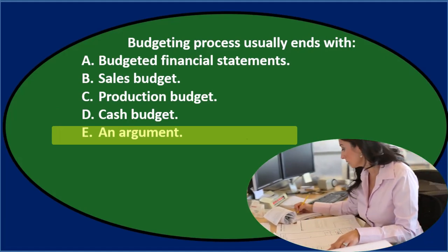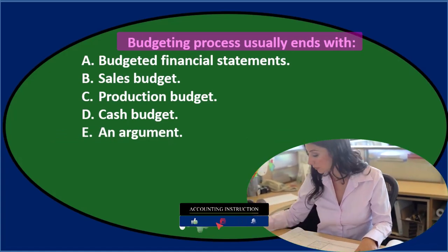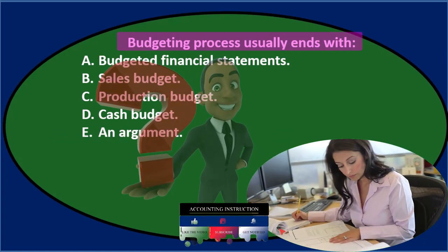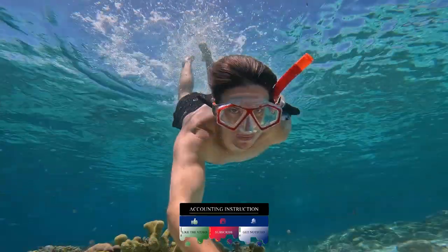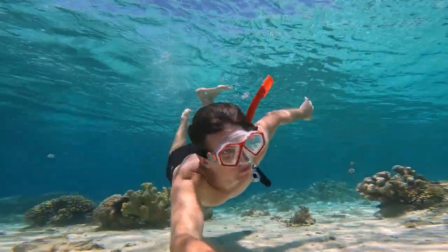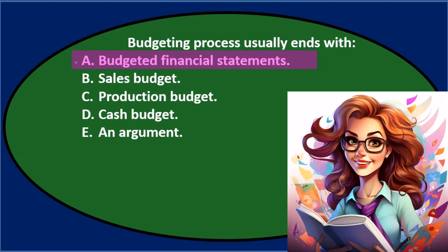Let's go through this again using the process of elimination. The budgeting process usually ends with — now, whenever you see a question like this, we have to make the budgets in some kind of sequential order. If we just try to dive into some component of the master budget without thinking about it in a process-type fashion, it'll be a mess. So we've got to do it in order, visualizing the order — looking at the end. What's the last thing that's going to happen? A, the budgeted financial statements — that sounds pretty reasonable, because after you go through the whole process, you're going to have a budgeted balance sheet and income statement. So I'll keep that for now.